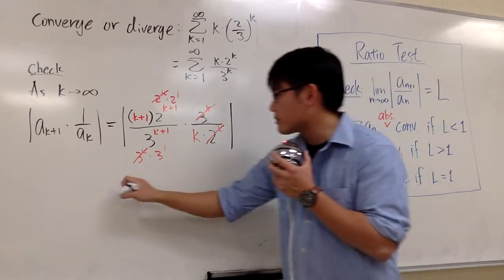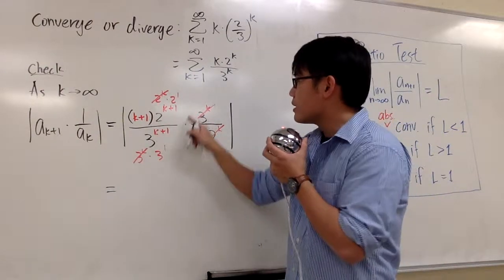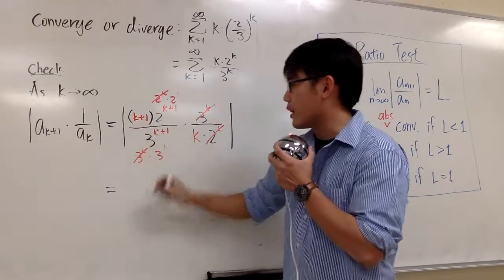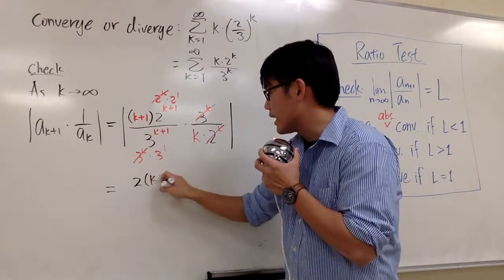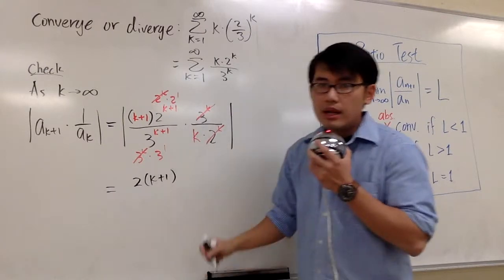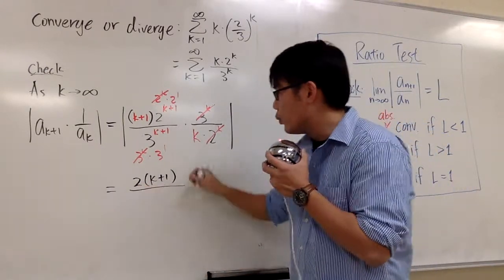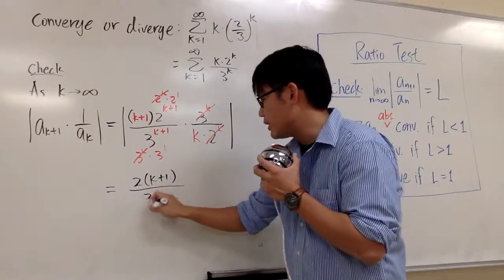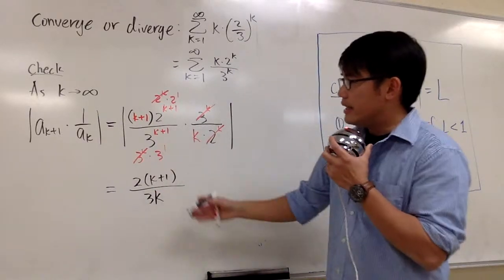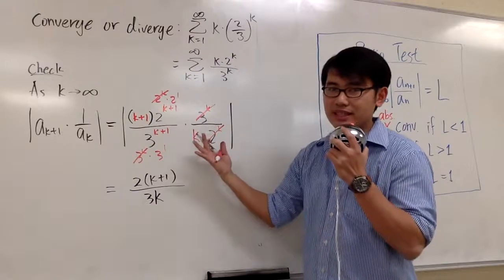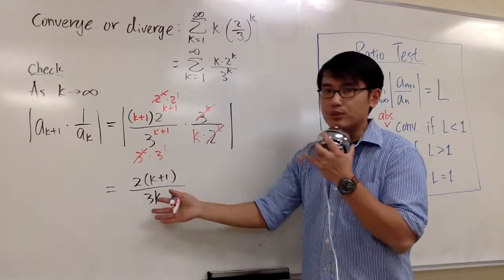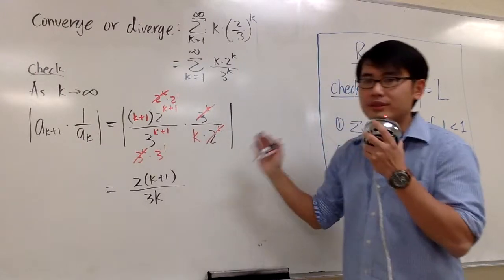So what do we get? On the top, we have 2 to the first, right here, times the k plus 1. 2 times k plus 1. And on the denominator, we have this 3 right here that's left, and then we have this k. So we have just 3k. And then, because everything inside is positive, because k goes from 1 to infinity, we can just lose the absolute value.